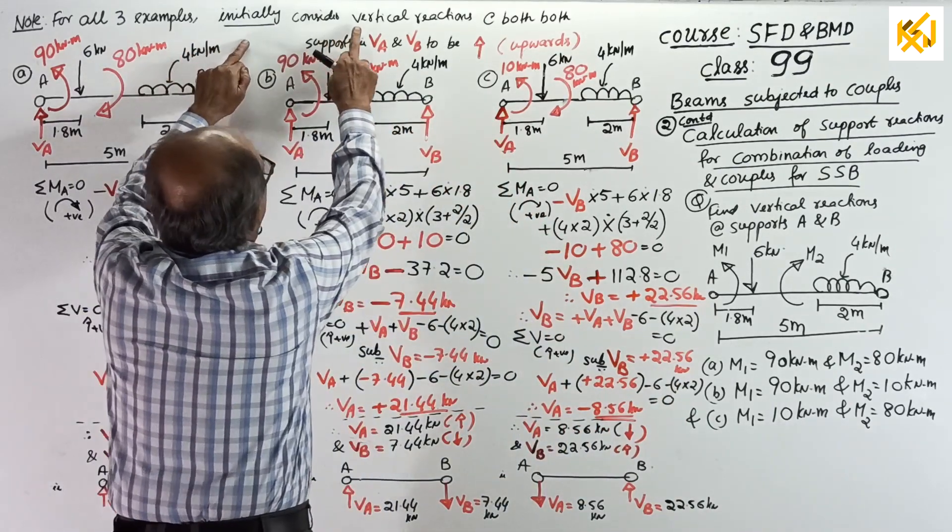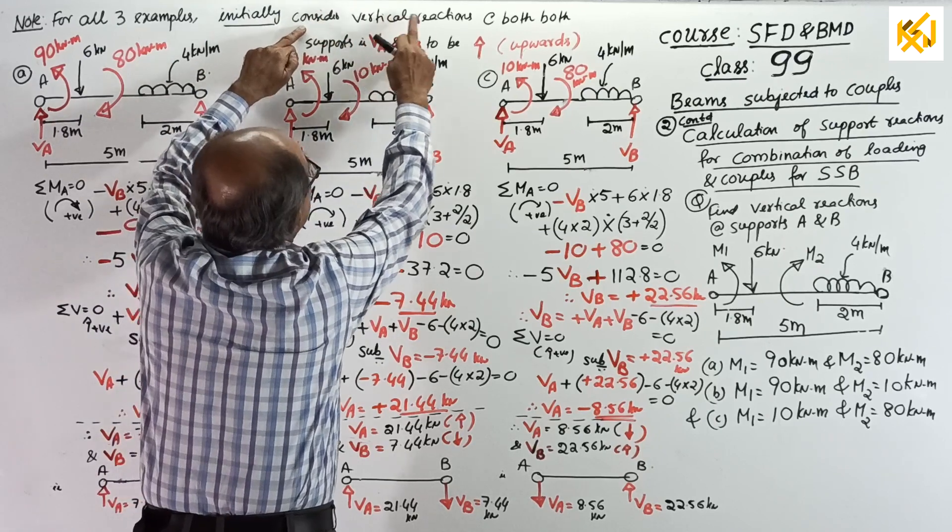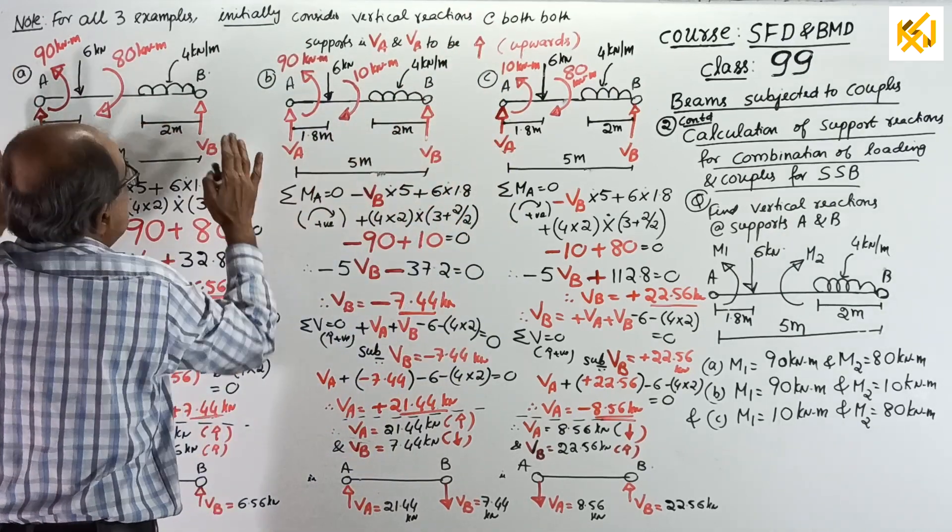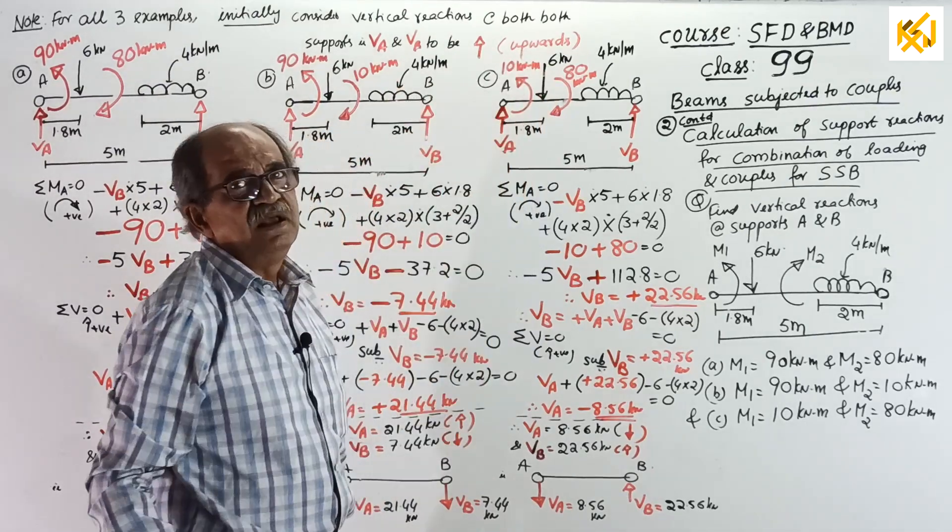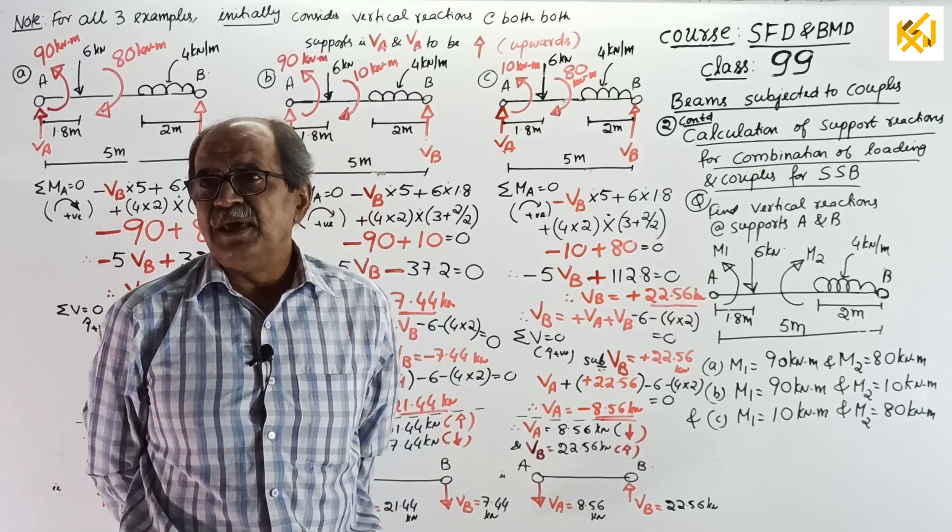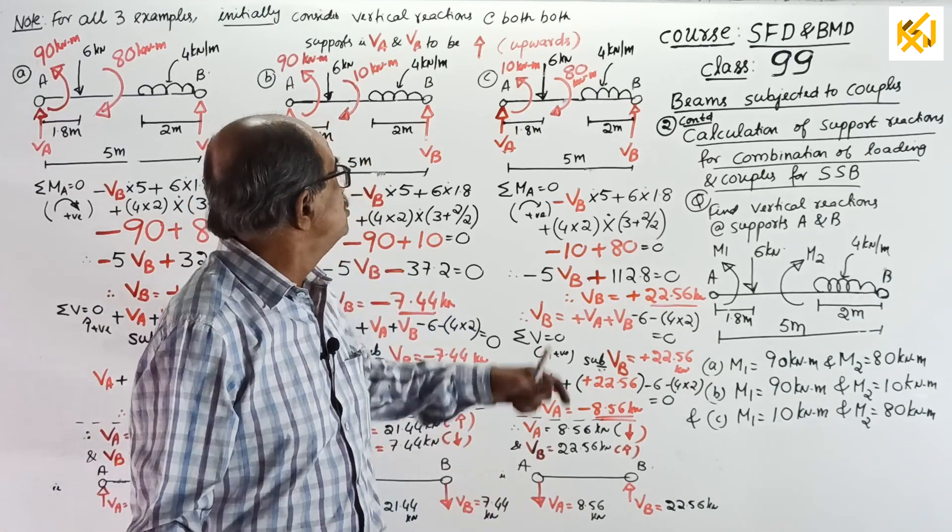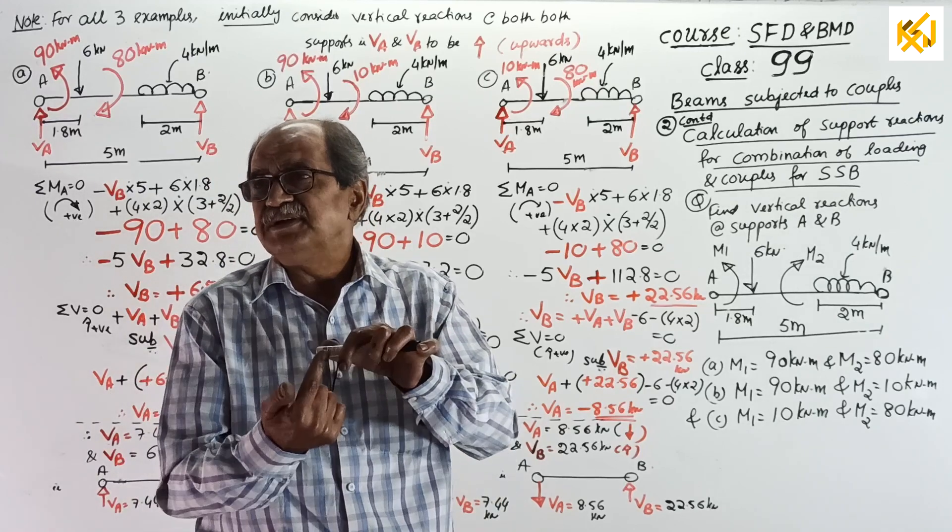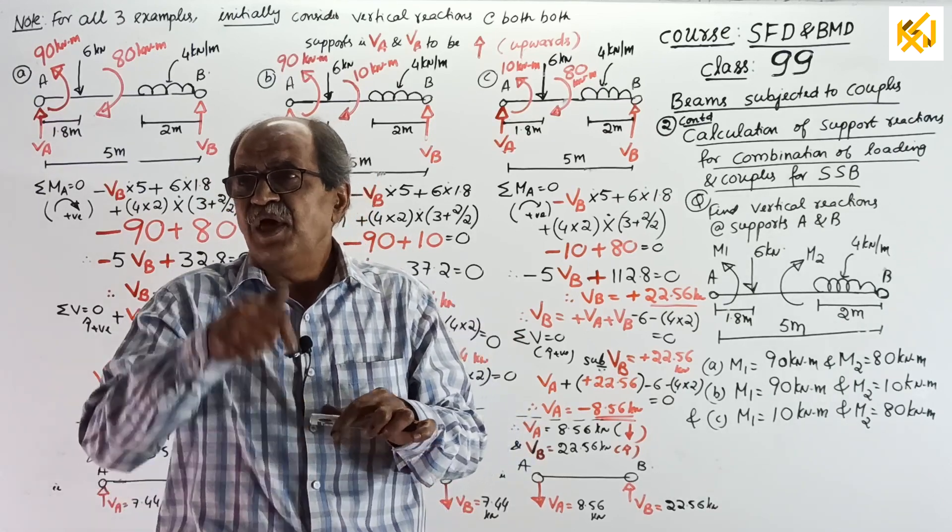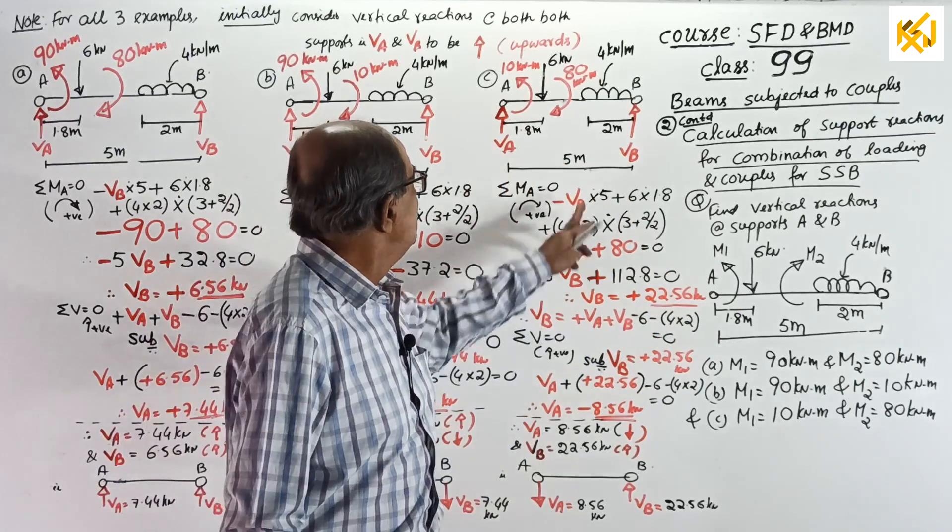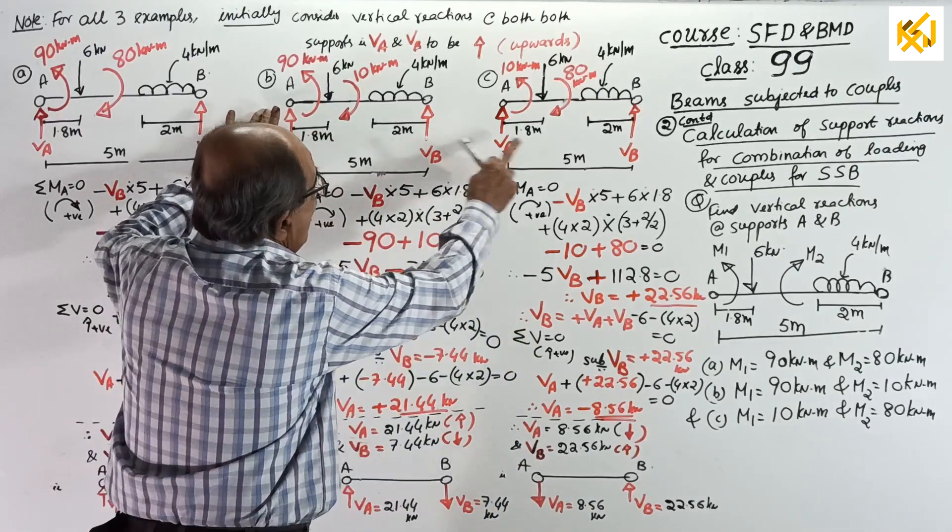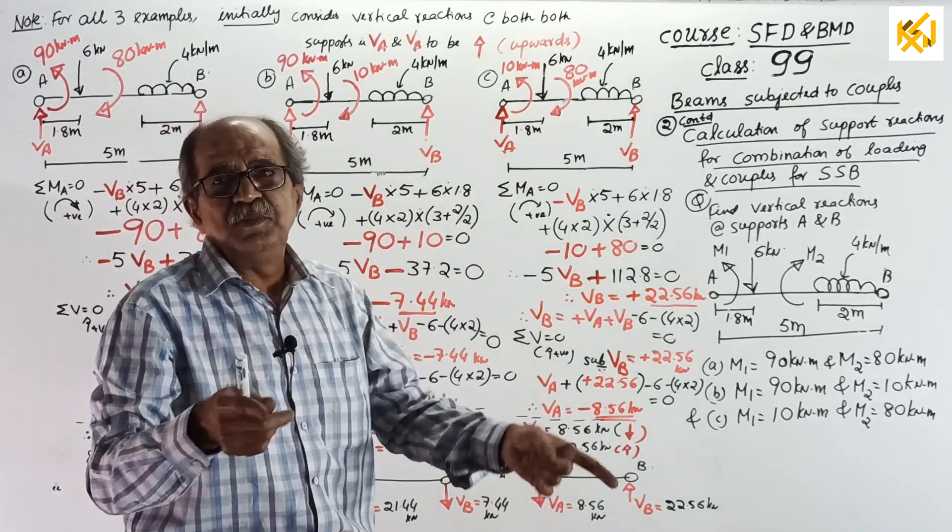Initially assume, consider or assume, you can write, initially consider or assume, vertical reactions at both supports, that is VA and VB, to be upwards. So, all three questions. So, all three questions, I am assuming, vertical reactions to be up. I told so many times earlier, once you assume the reactions with direction, and apply equilibrium conditions, if you get positive, it means assume direction is correct. So, continue with the same direction. Or, in case you get negative, assume direction is wrong, then consider that reaction in a direction opposite to assume and continue for further calculations.